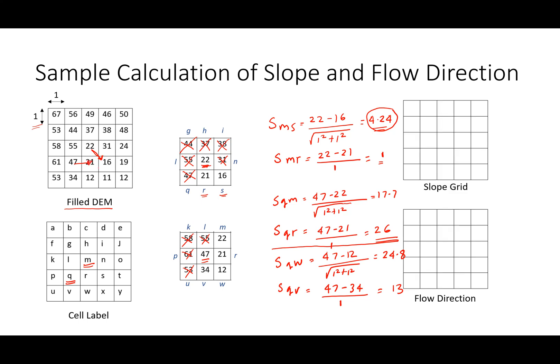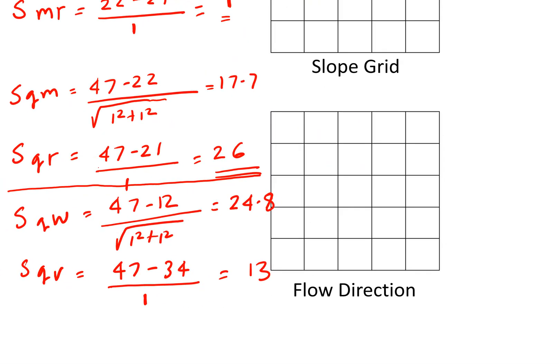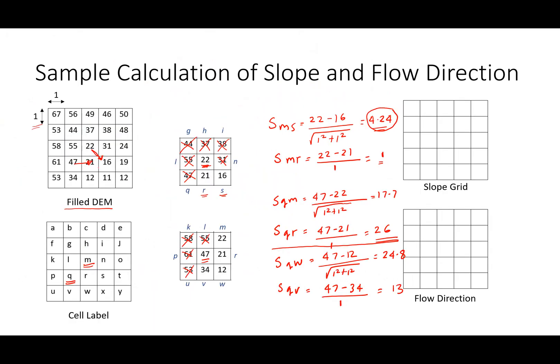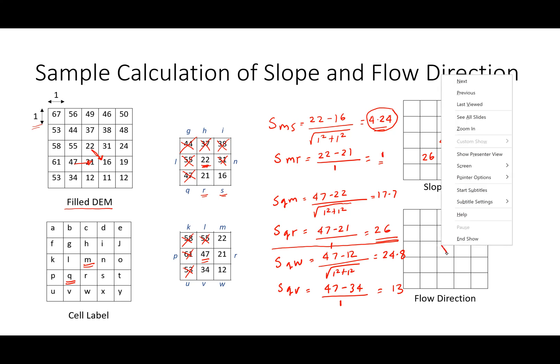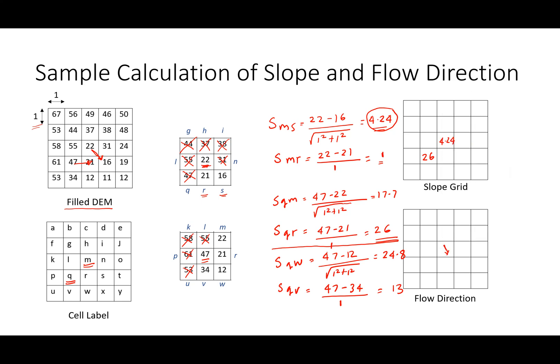We can now write the slope values for M and Q. The slope value for M is 4.24 because that's the steepest downslope found for M, and for Q it's 26. We also know the direction in which the water will flow based on that steepest slope — this is the direction for M and this is the direction for Q. You can pause here and try to calculate the steepest slope and direction for any of the other cells.